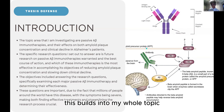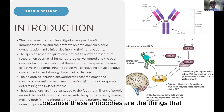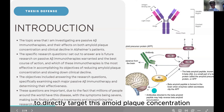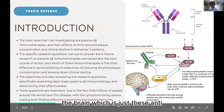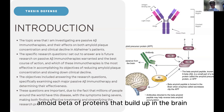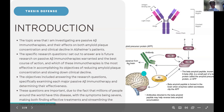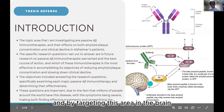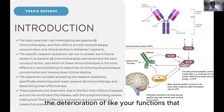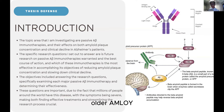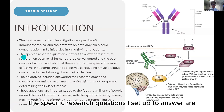These antibodies are the things that will be used in immunotherapies to directly target amyloid plaque concentration in the brain — these anti-amyloid beta proteins that build up in the brain. By targeting this area, we can reduce clinical decline, which is basically the deterioration of functions that Alzheimer's patients experience.